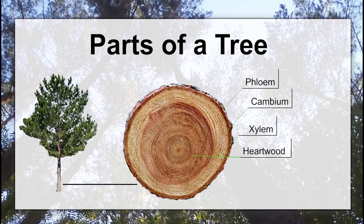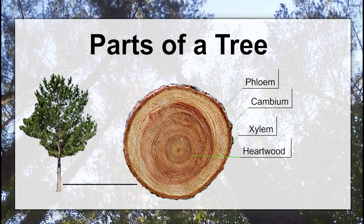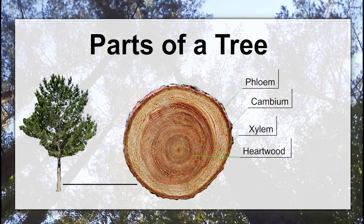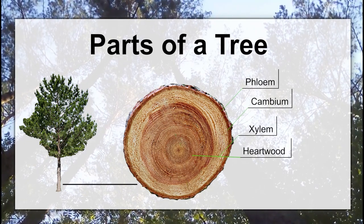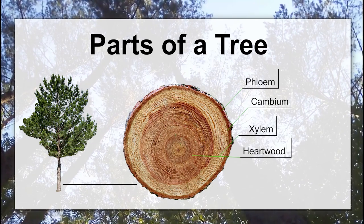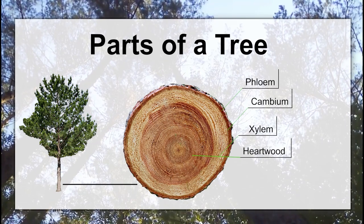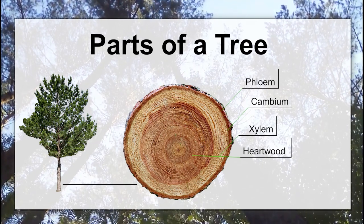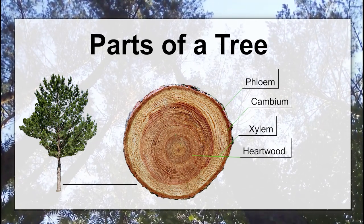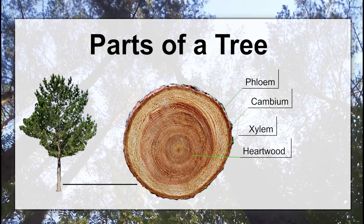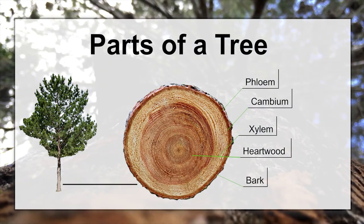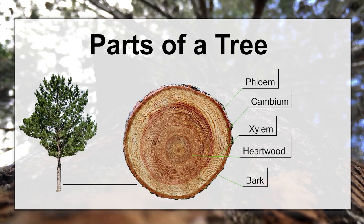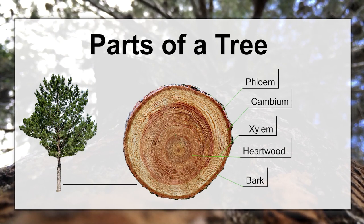The heartwood is the center part of the tree. The heartwood develops as the tree gets older. This part is older than your sapwood and no longer carries sap. It gives the trunk support and stiffness and makes it nice and strong. And lastly, on the outside of the tree you find the bark, which offers protection from insects and diseases.